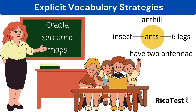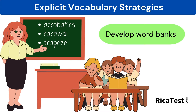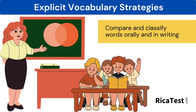Create visuals with the students, such as a semantic map, which is also called a word map. Develop and provide word banks — this is especially helpful for English learners and struggling readers. Compare and classify words orally and in writing by teaching students visual organizational methods, such as the Venn diagram.